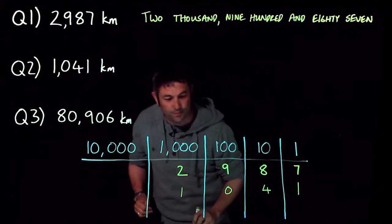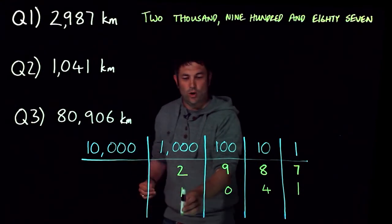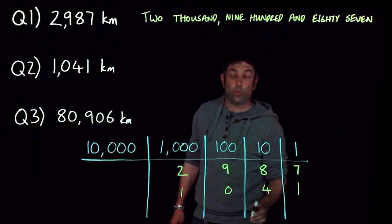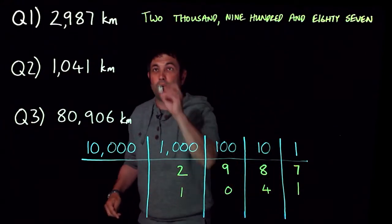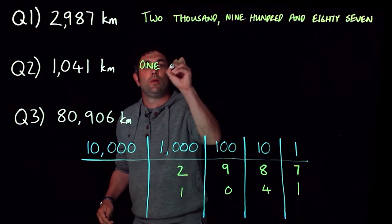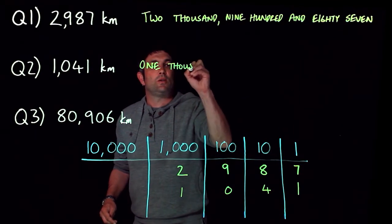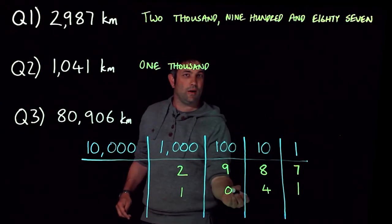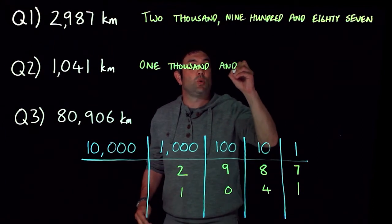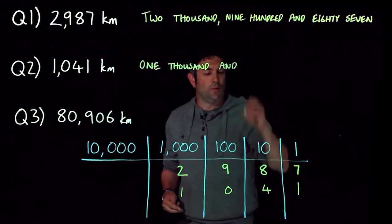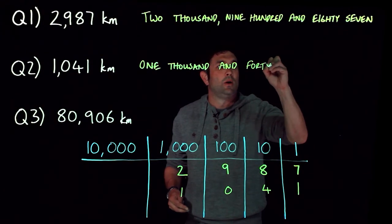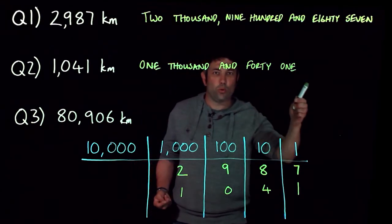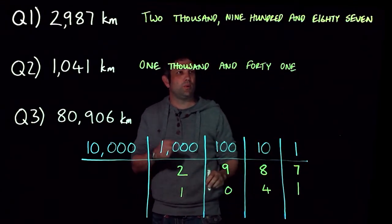This one's a bit more interesting because we've got one thousand, no hundreds, four tens, and one unit. So, one thousand. When we had the hundred before, we put an 'and' between a hundred and a ten. But there aren't any hundreds, so I'm actually going to stick the 'and' between the thousand and the ten this time. Four tens are called forty, and then there's the one. One thousand and forty-one. We've got to have the 'and' in there before the tens, basically.